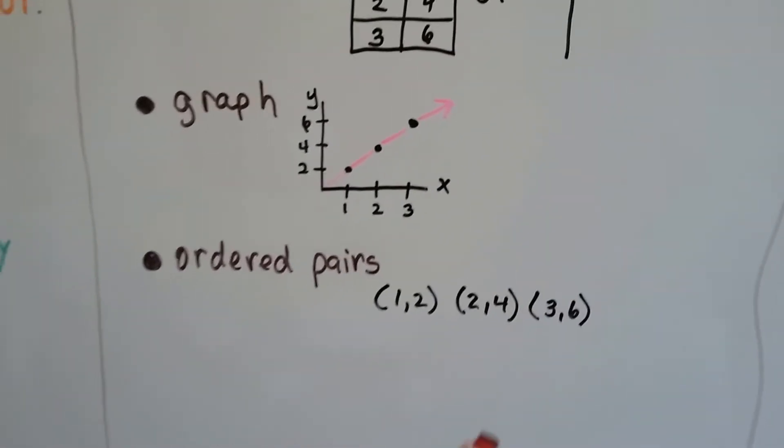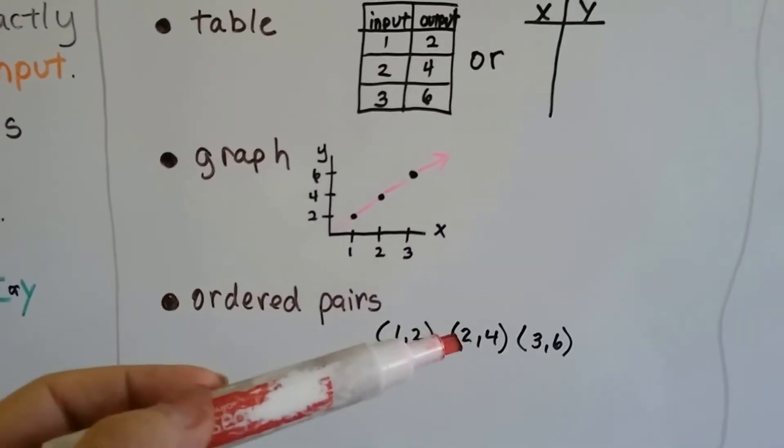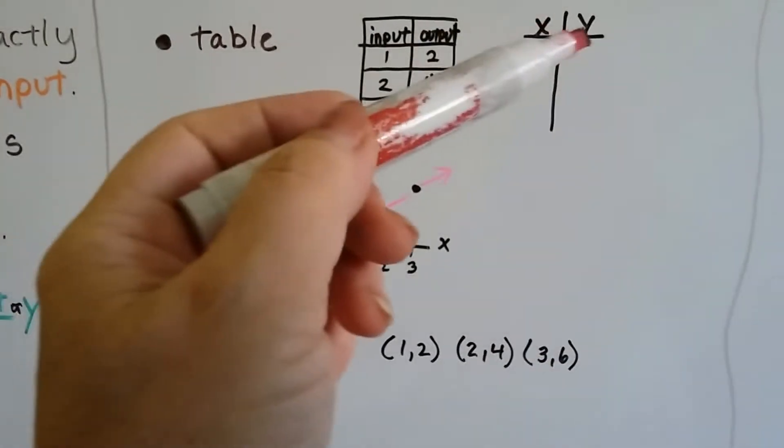It can also be ordered pairs. We've got our 1, 2 as our xy, our 2, 4 as our xy, and our 3, 6 as our xy.